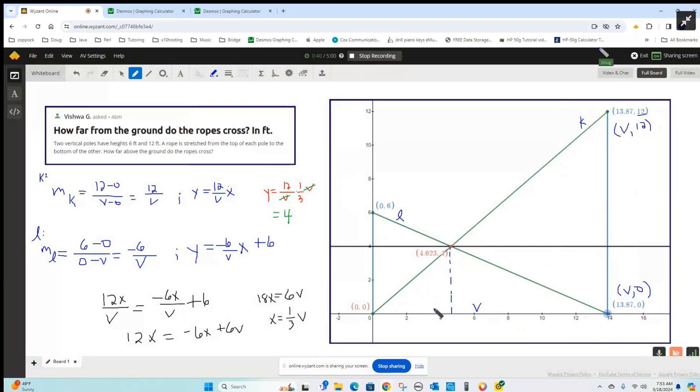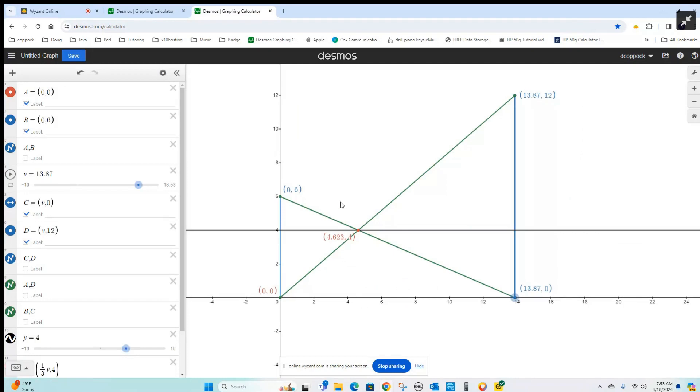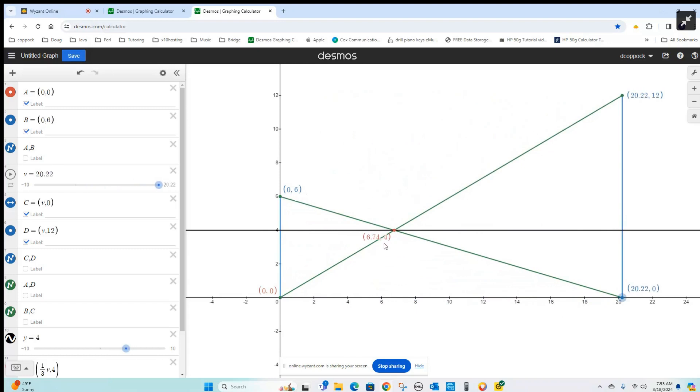But if I share my screen and go to Desmos and drag this point around here, you can see that it doesn't matter how far the poles are apart. They always cross at a place where the height of this point of intersection is four.